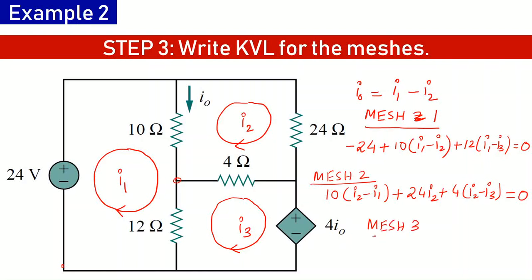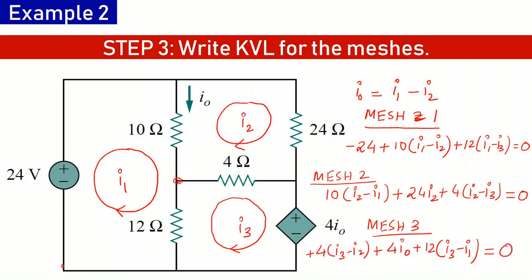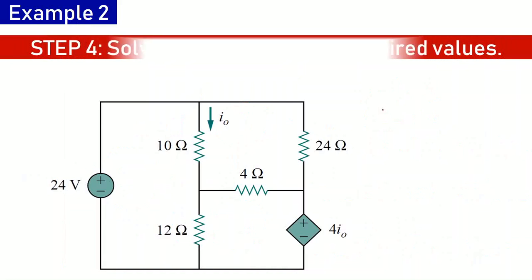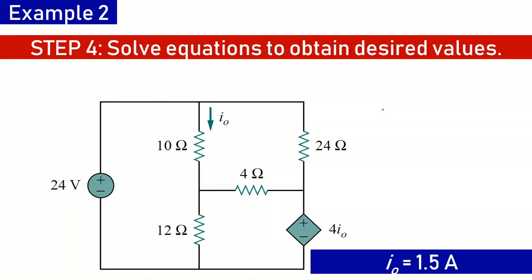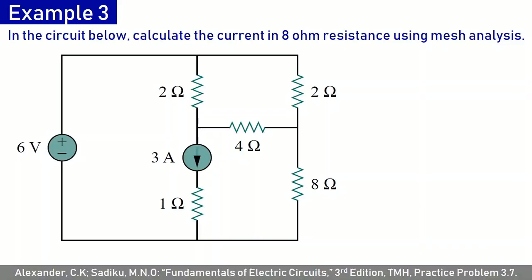For mesh 3, starting from a point in clockwise direction: plus 4(i3 minus i2), then the current-dependent voltage source — a fall in potential, so positive sign with value 4·i0, then the 12-ohm resistance with current i3 minus i1, equals zero. We now have equations involving i1, i2, i3, and i0. Substituting i0 equals i1 minus i2 and solving, we get i0 equal to 1.5 amperes.